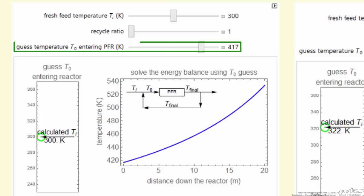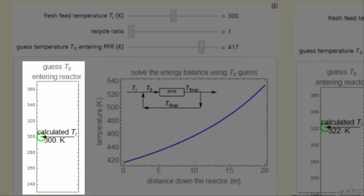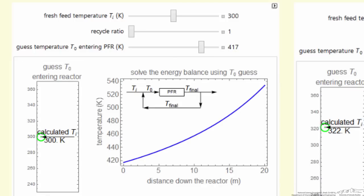That's what this slider does, and it's displayed here. The green circle corresponds to the value of T initial that we picked in this top slider, 300 Kelvin. We're going to adjust the entrance temperature to the plug flow reactor until this arrow lines up with our known value for T in, the inlet temperature.